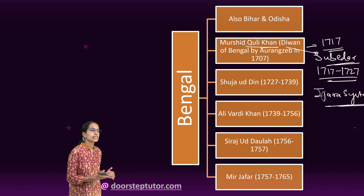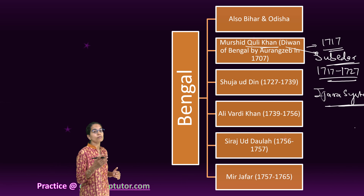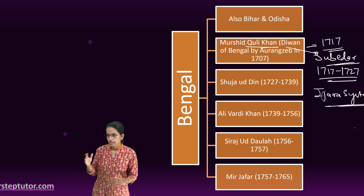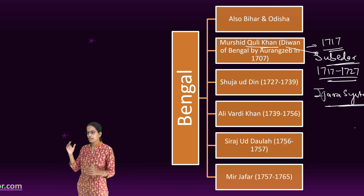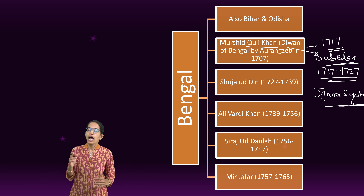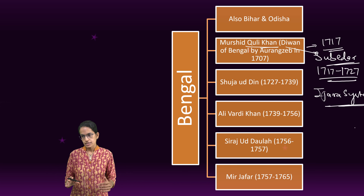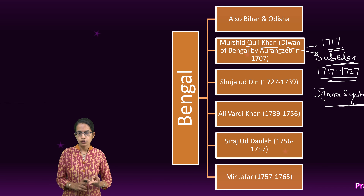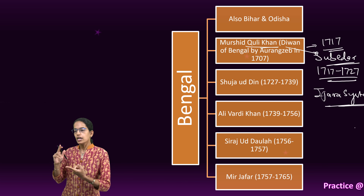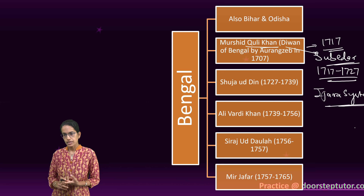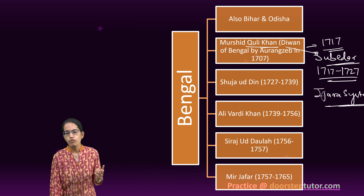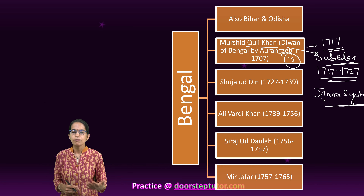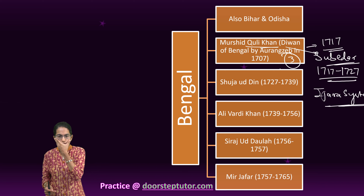He also shifted the capital from Dhaka to Murshidabad, which was an important development during his time. So, the Ijtara system, the shifting of the capital from Dhaka to Murshidabad, and the reorganization of Zamindari were his three important contributions. Next to him came Sujahuddin.